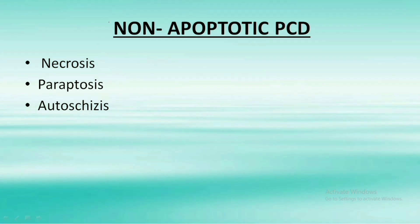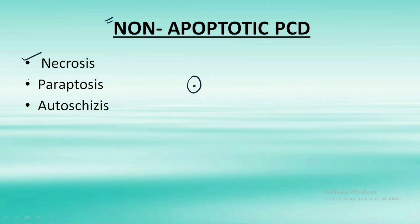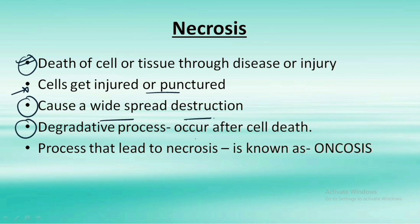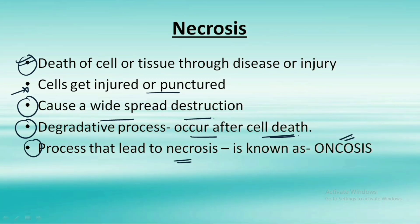Now let's understand non-apoptotic PCD. In addition to natural cell death, there are phenomena in our body that are indeed cell death but occur in a non-apoptotic manner. These are named necrosis, paraptosis, and autosis. Necrosis is the death of a cell or tissue through disease or injury. In this type, the cell gets injured or punctured, causing widespread destruction. It is a degraded process occurring after cell death, and the process leading to necrosis is called oncosis.